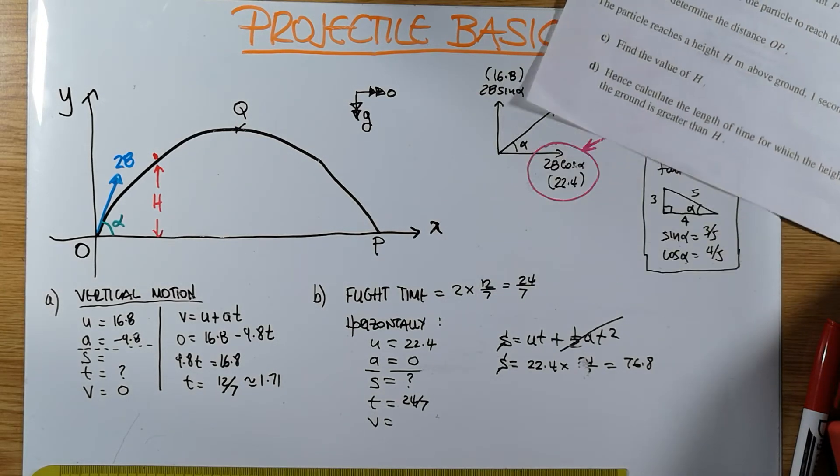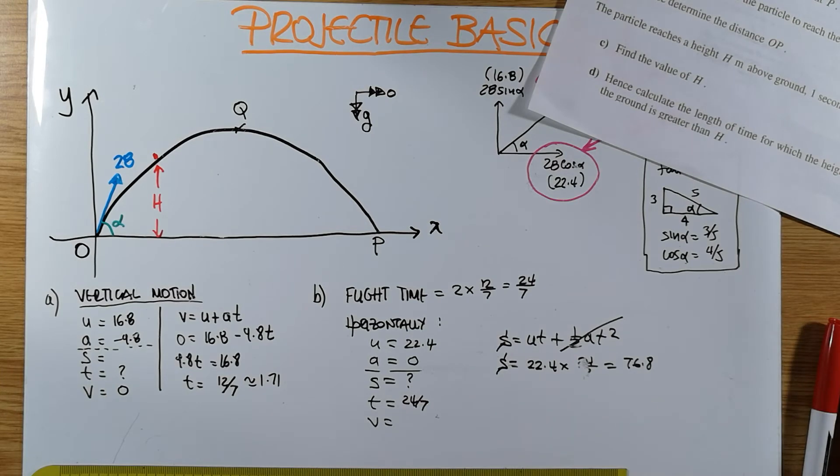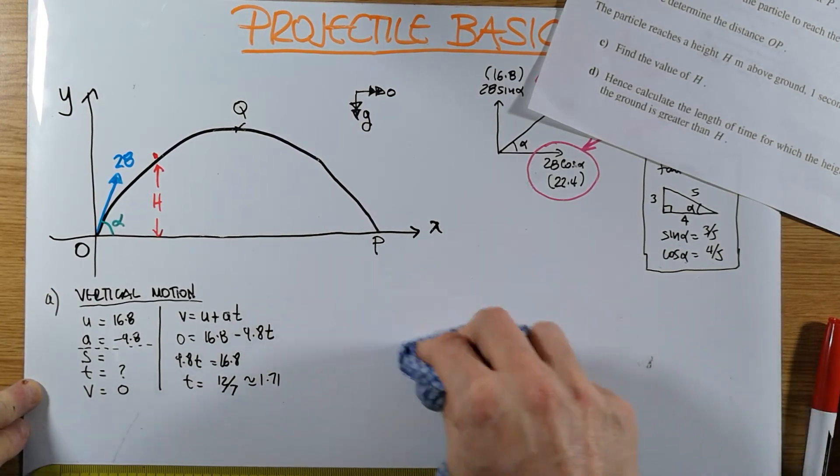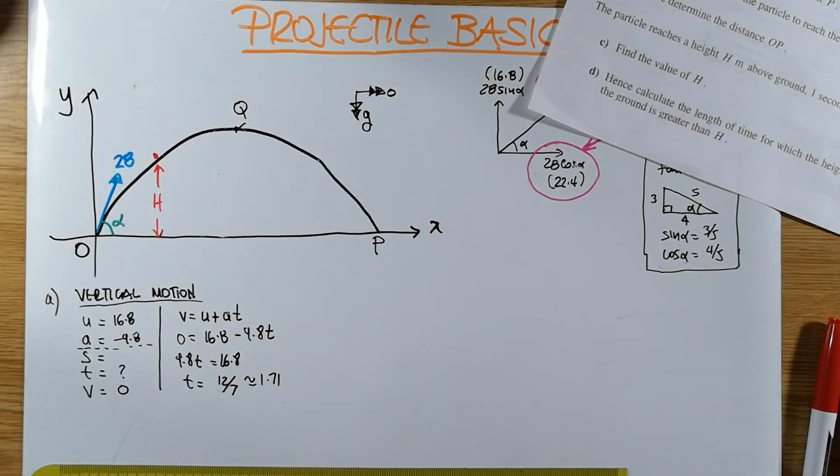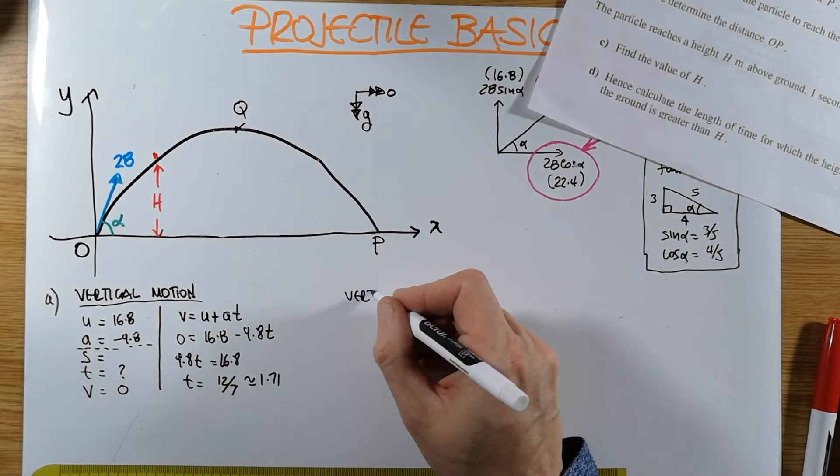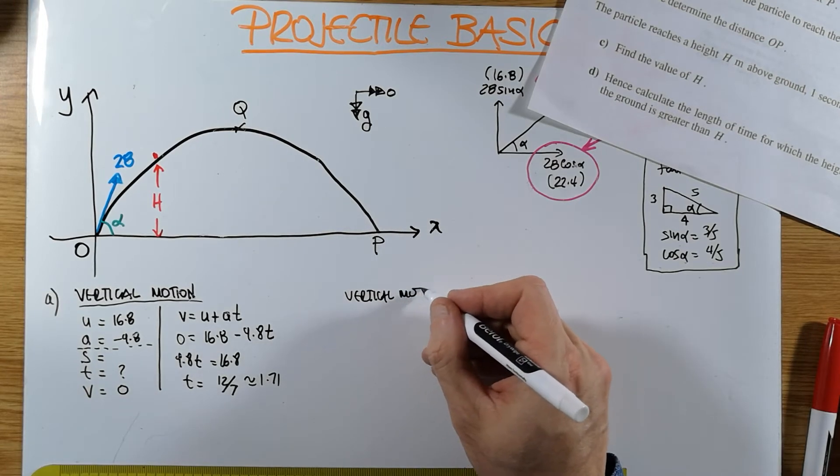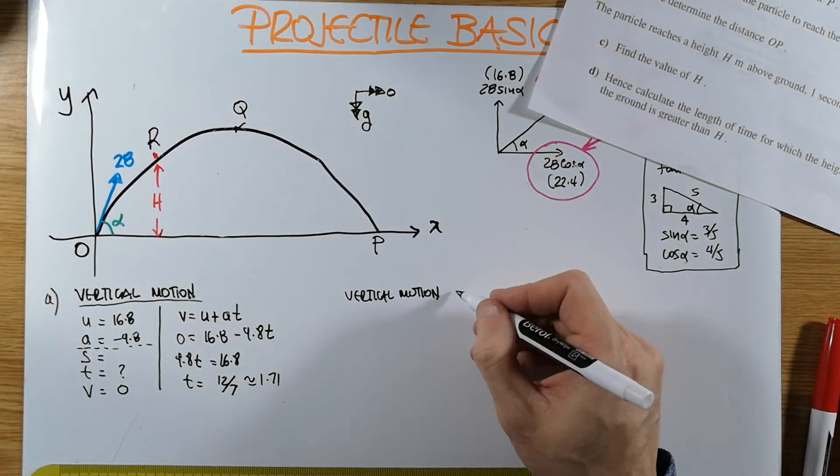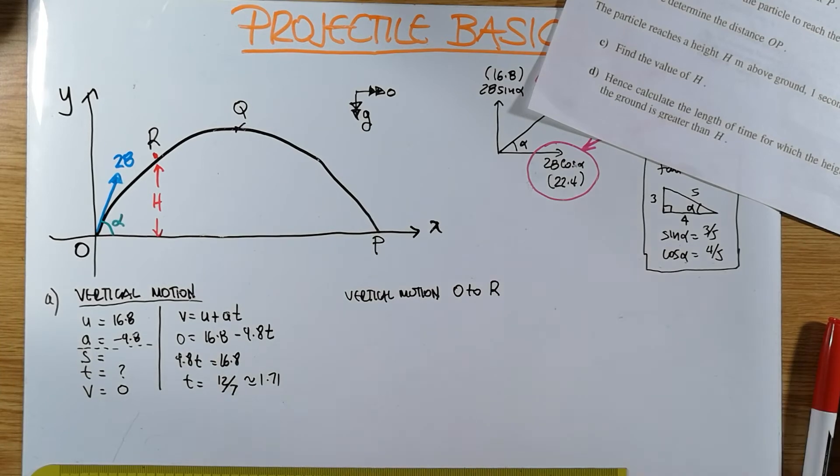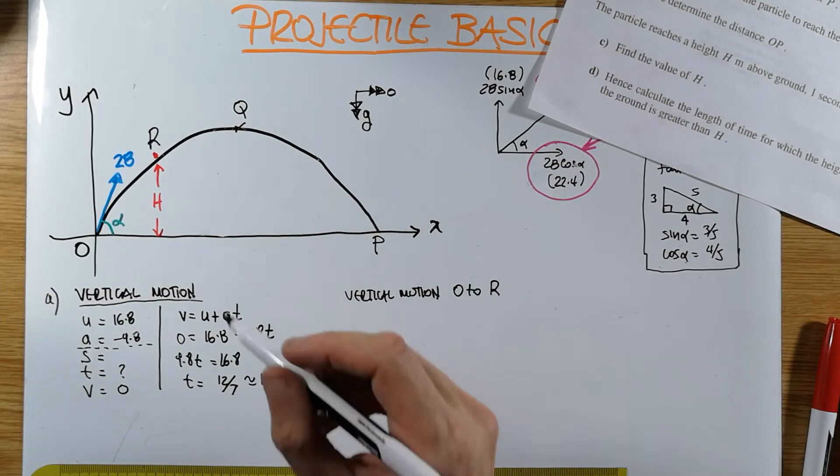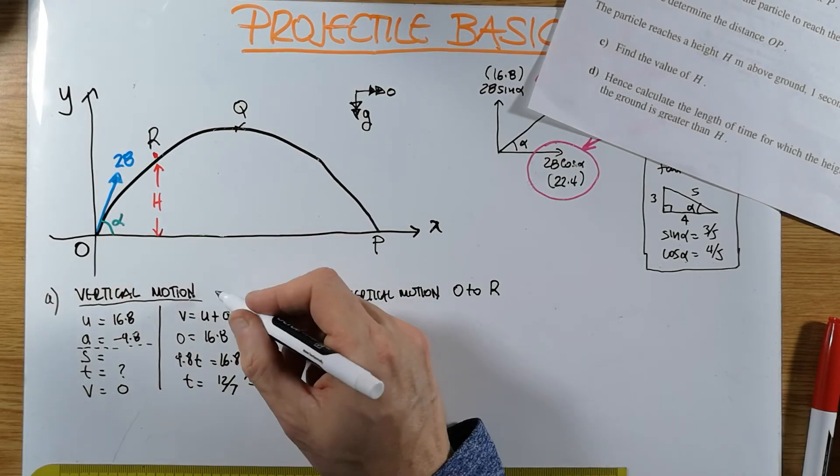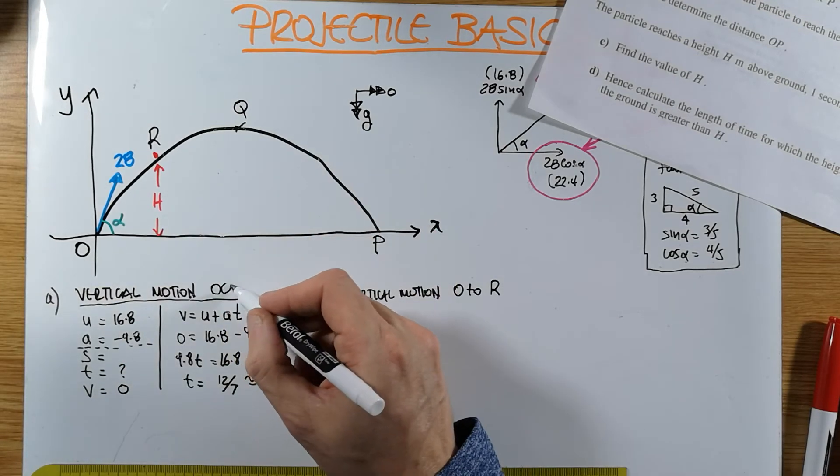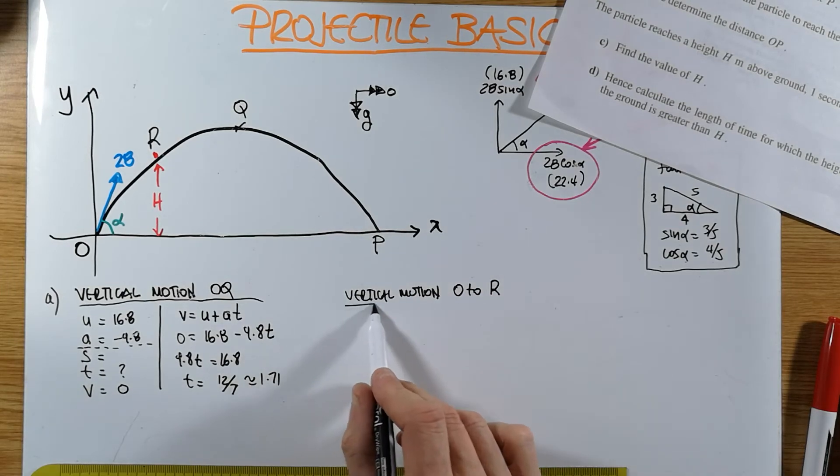How do I know that this height H is before we reach the maximum point? It's because it's one second after projection, and I know it takes 12 over 7 seconds, in other words 1.71 seconds, to reach the maximum. So it hasn't quite reached maximum yet. So that point is here. So what is it asking us to find? Find the value of H. I'm going to make some room. Part C is to find what's the value of H. Because H is a vertical quantity, I'm going to look at the vertical motion again. Vertical motion. Let's use a letter. O, P, Q. This is the point R.